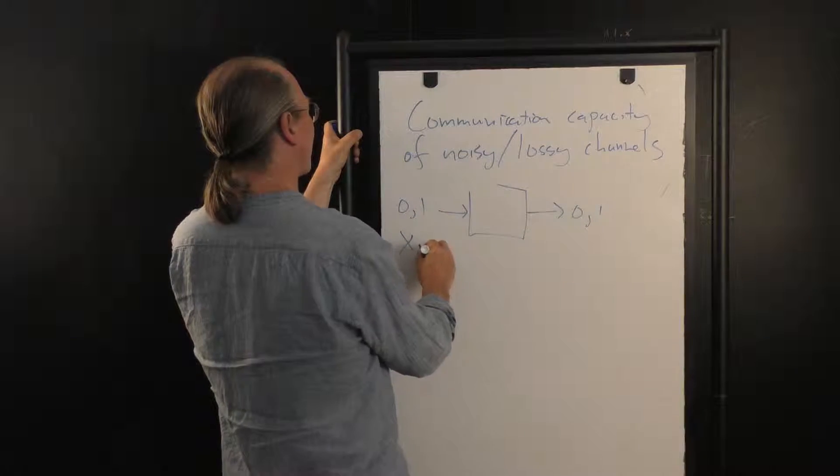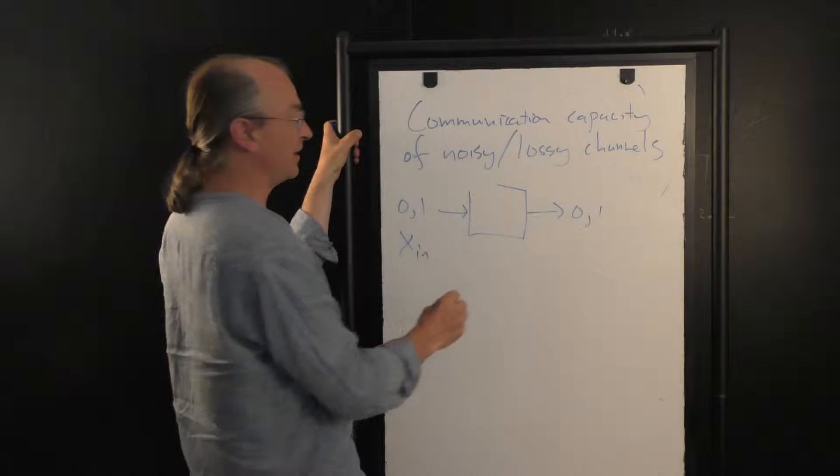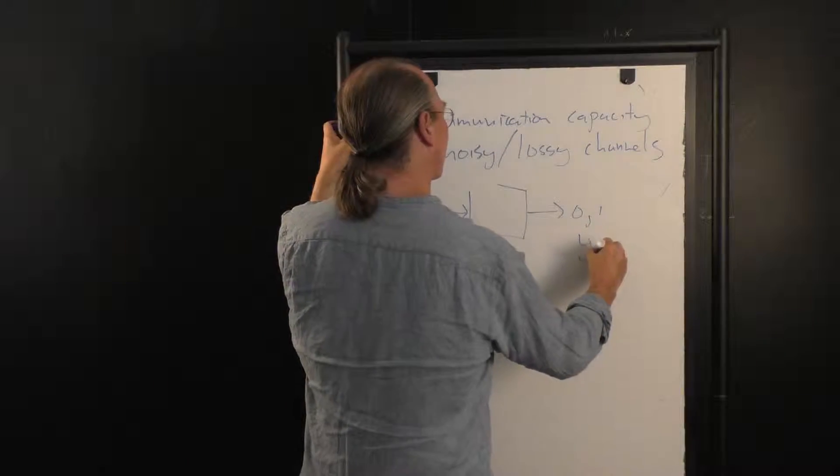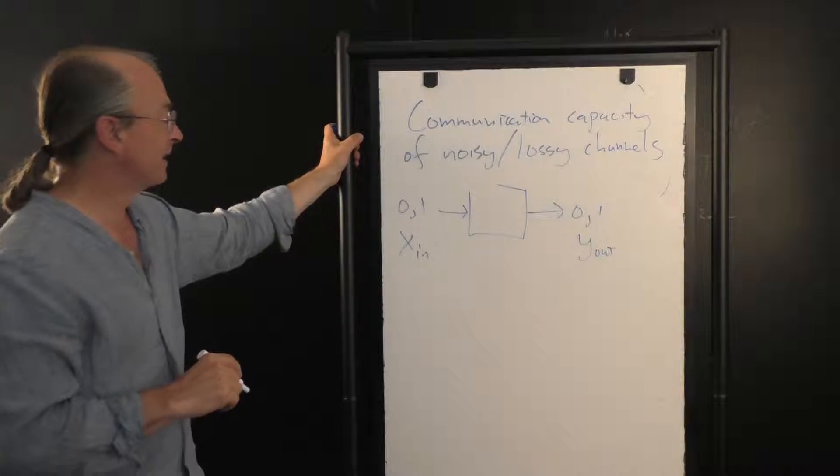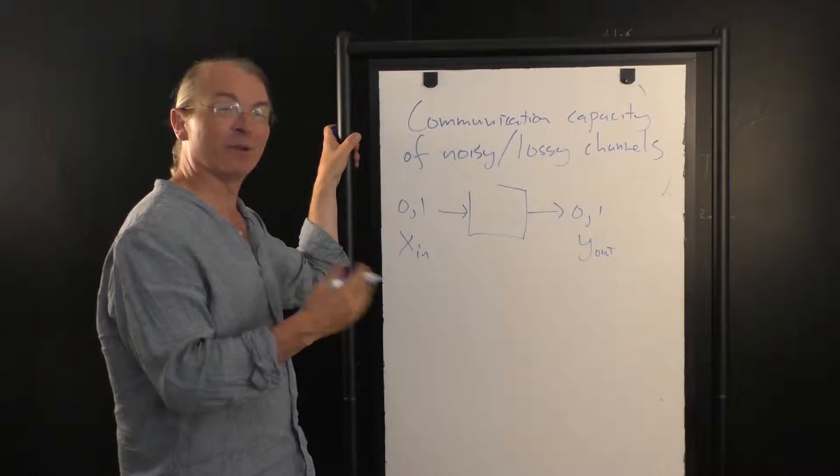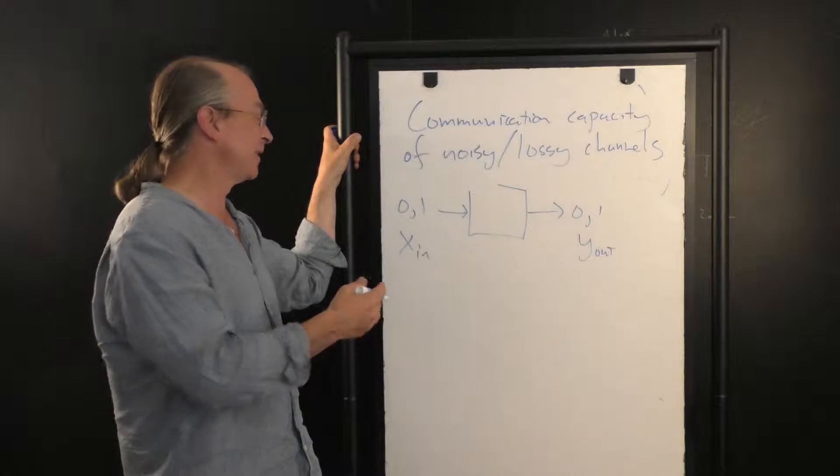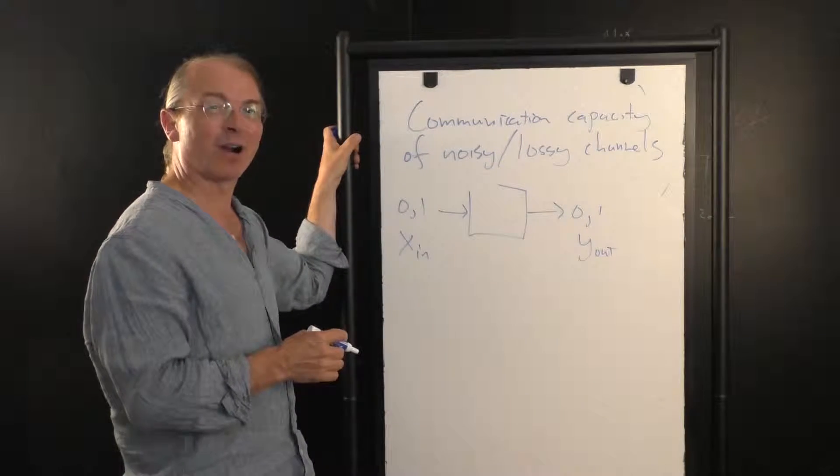And we could have information that's coming out. I'm going to call this variable that corresponds to what goes in x_in, I'm going to call this variable coming out y_out. Sometimes I'll drop the in and out, because in the case we are all familiar with what's going in and what's going out, x's are going in and y's are going out.